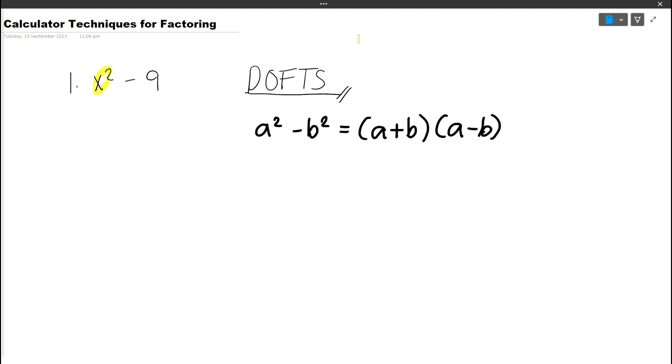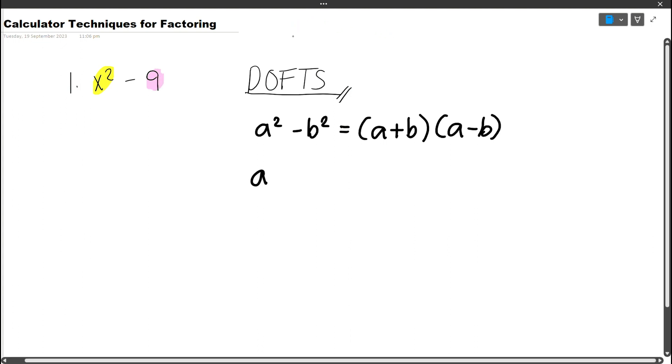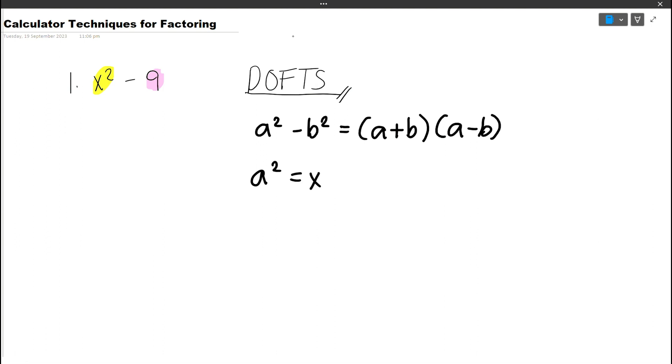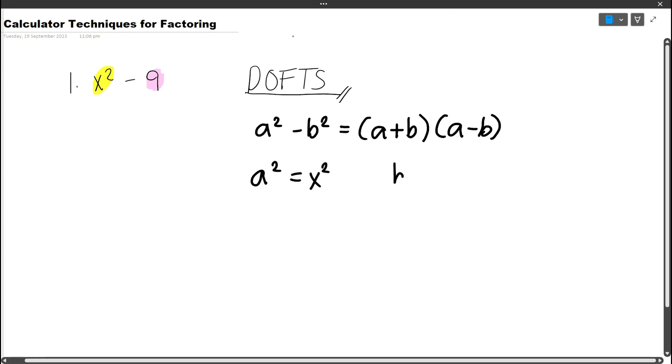a squared corresponds to x squared while b squared corresponds to 9. So again, our a squared is x squared while our b squared is 9.